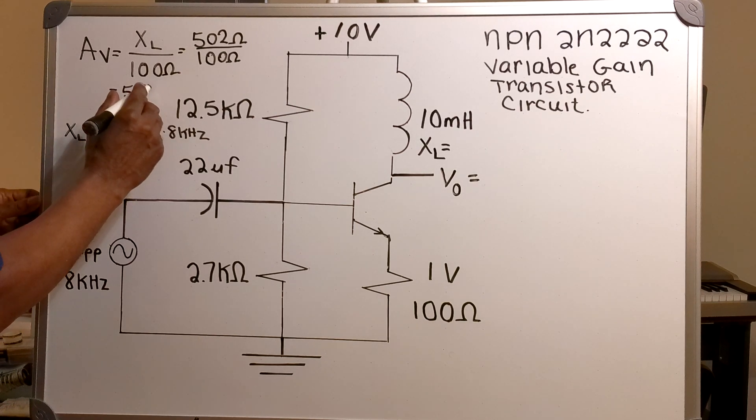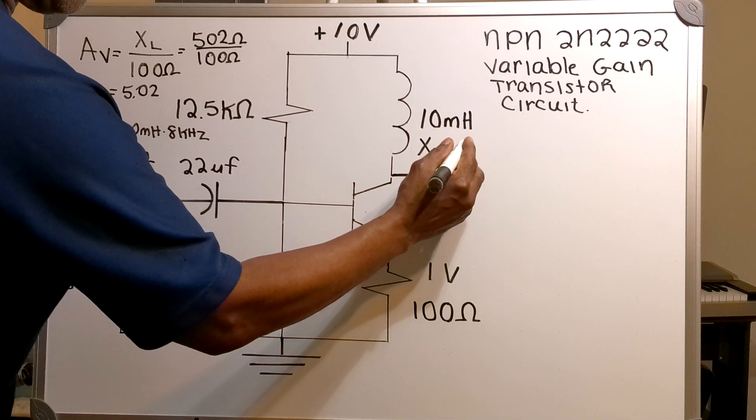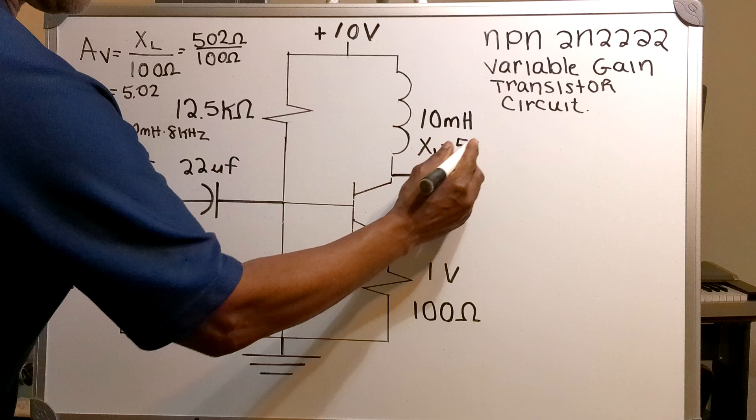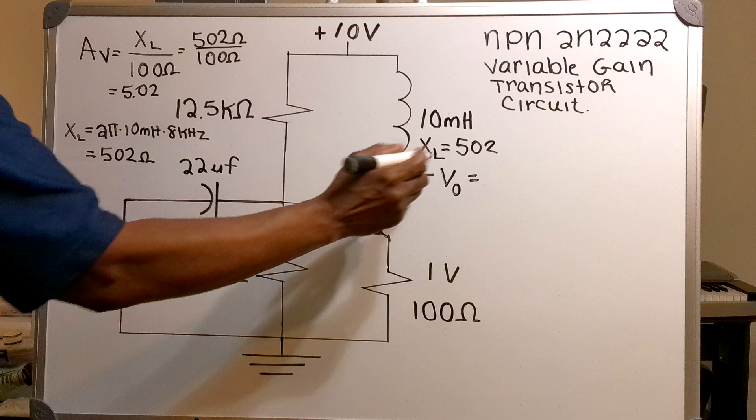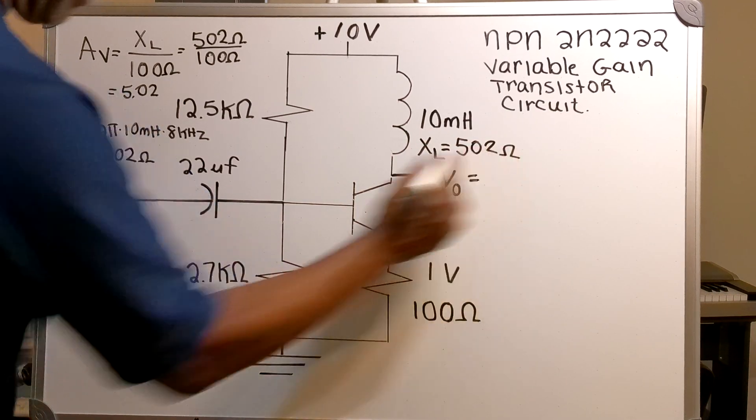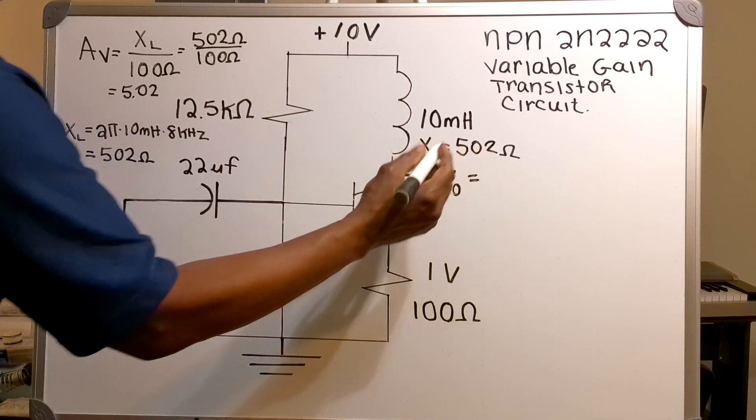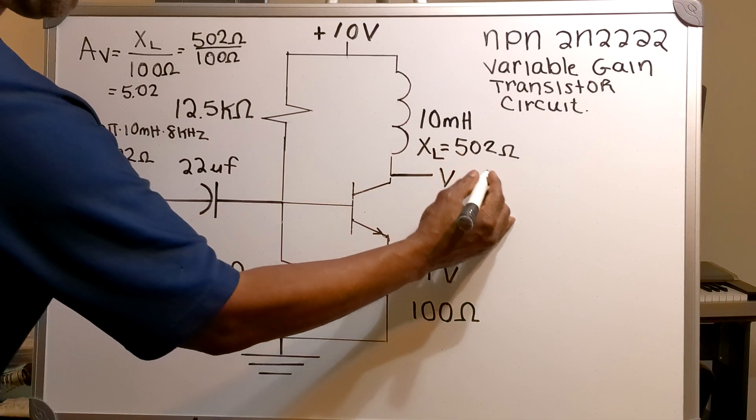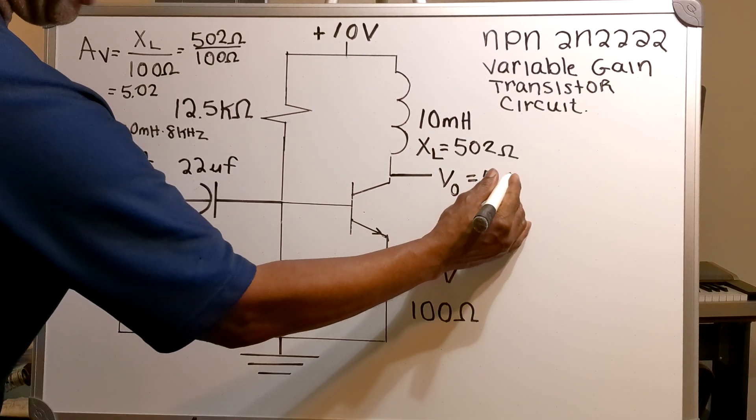So if I have a 1 volt peak to peak on the input and my inductive reactance is 502 ohms, then my output voltage will be 5.02 volts.